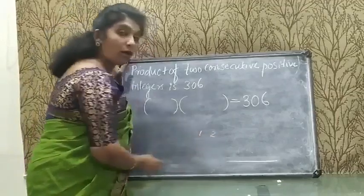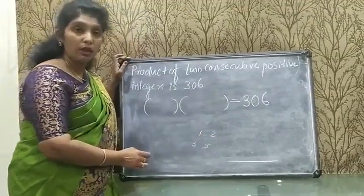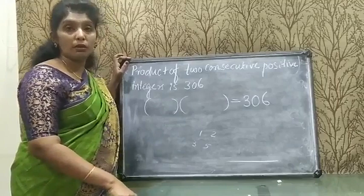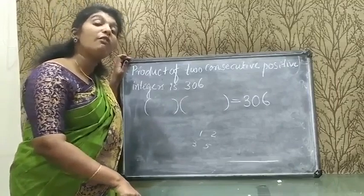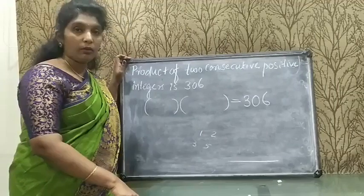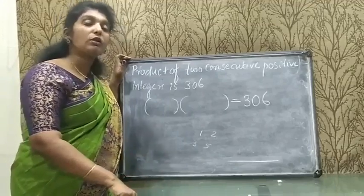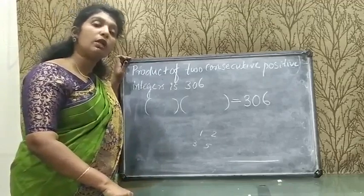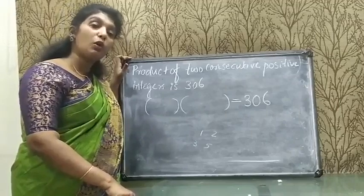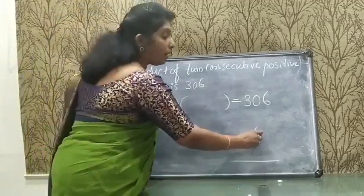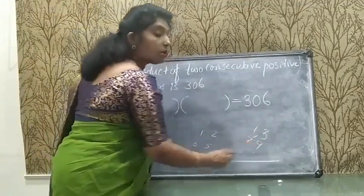For example, 1 and 2 are consecutive numbers, 10 and 11 are consecutive numbers. For consecutive even numbers: 2 and 4, 4 and 6, 10 and 12. For consecutive odd numbers: 1 and 3, 7 and 9.